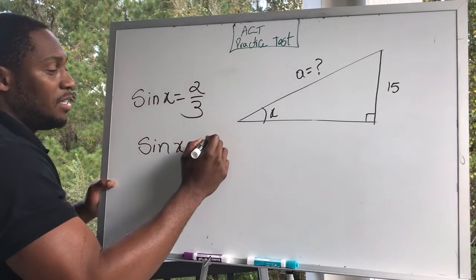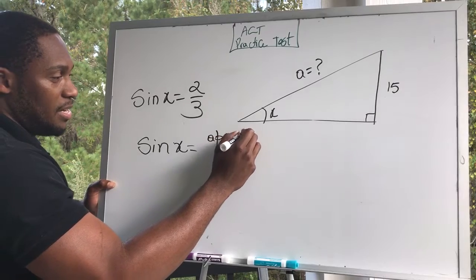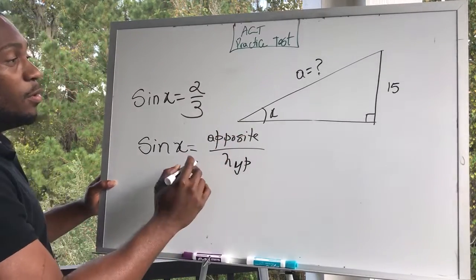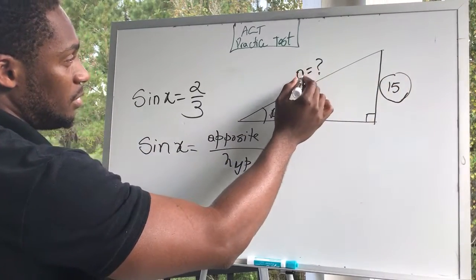Is the opposite side divided by hypotenuse. So it's the opposite side divided by hypotenuse, which is a.